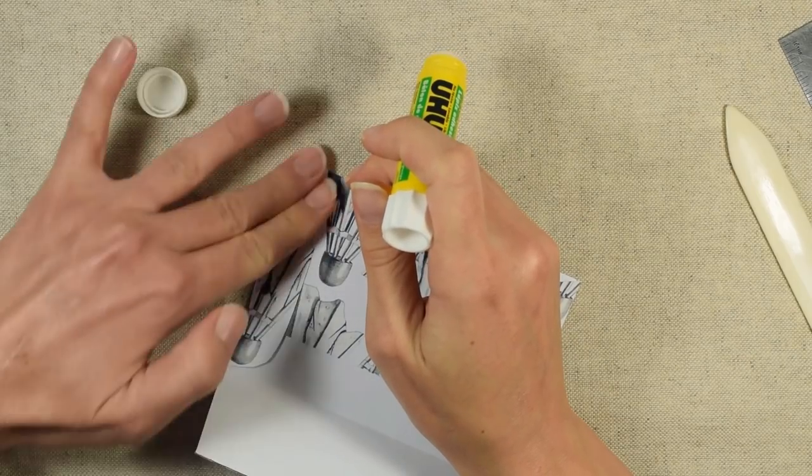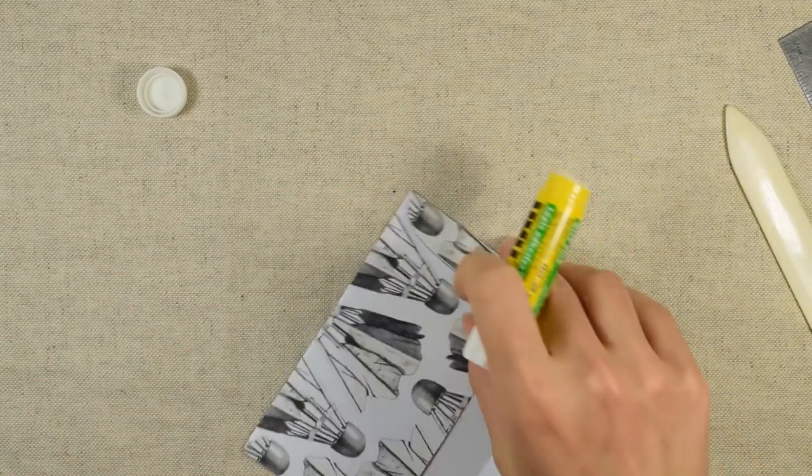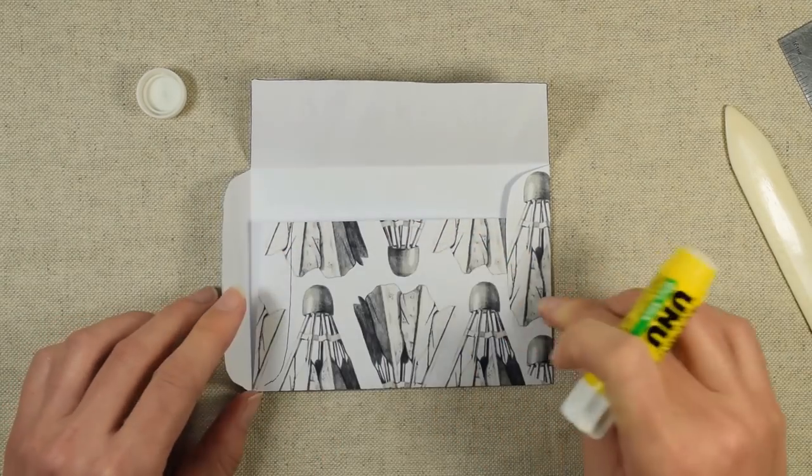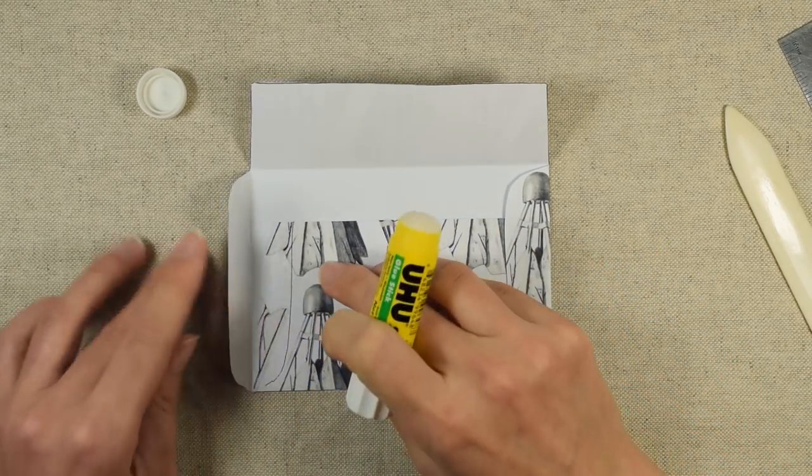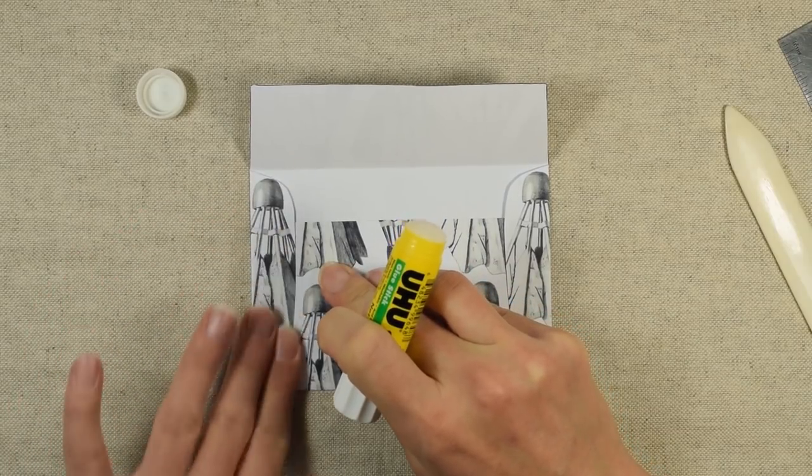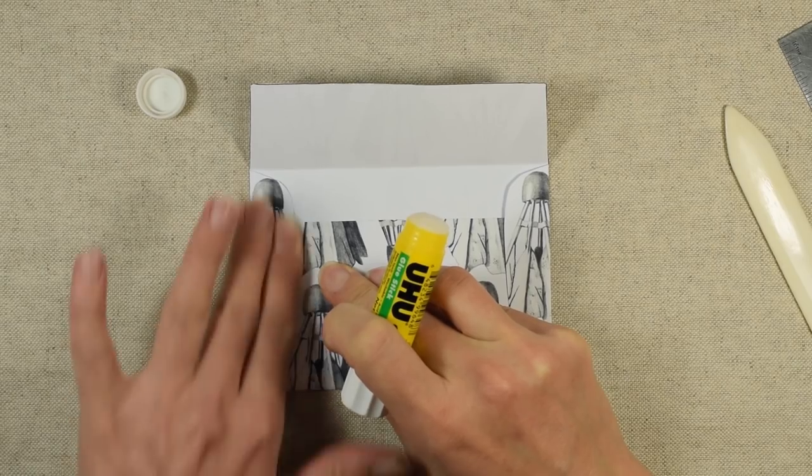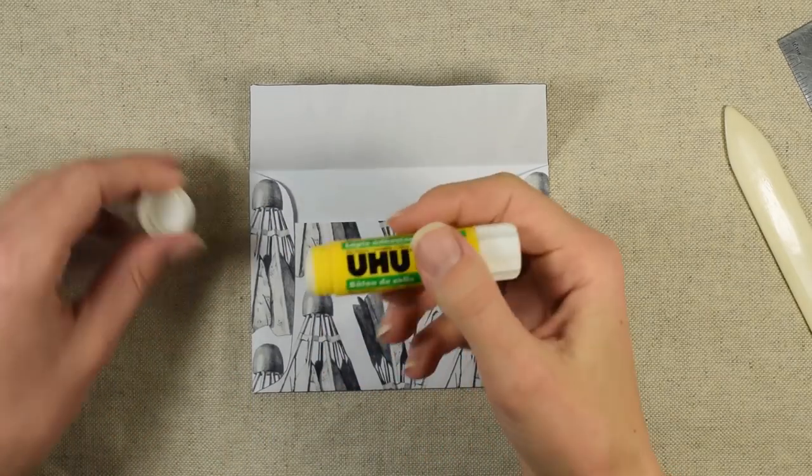I would use a glue stick instead of liquid glue because that way the glue won't come out at the edge. Usually if you just squirt liquid onto there, it will. One thing you can do to get around that is use a brush to apply liquid glue.